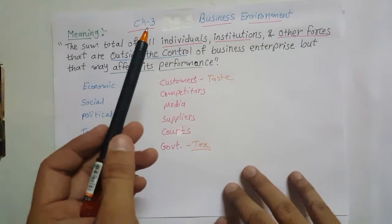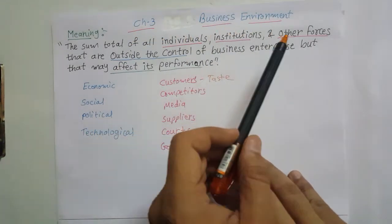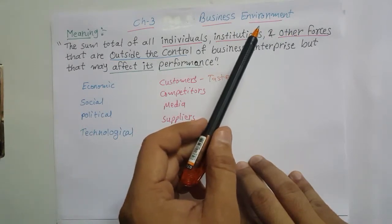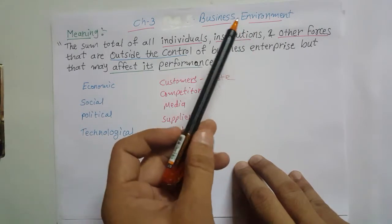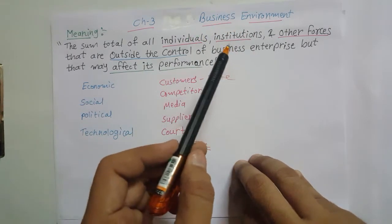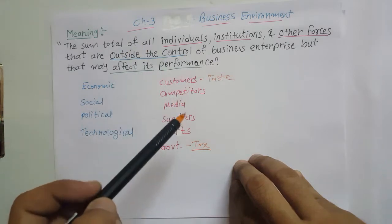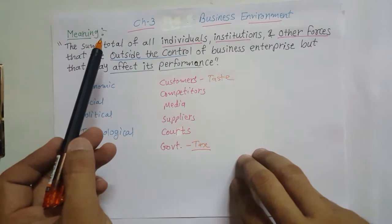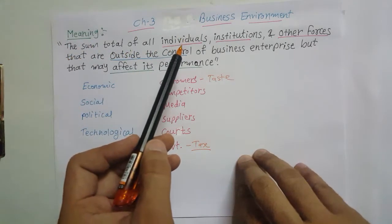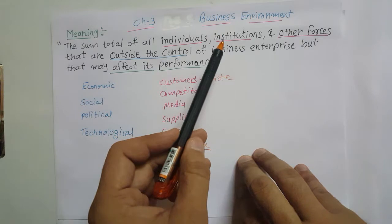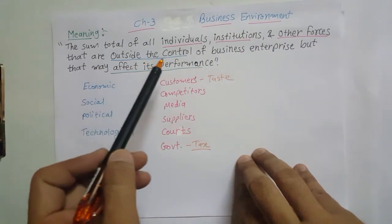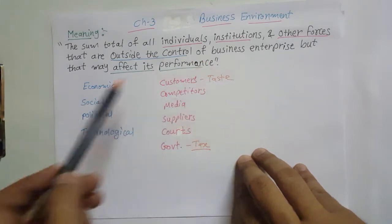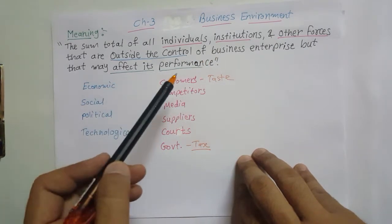Today we are going to start a new chapter: Business Environment. Environment includes the things around us, but when we talk about business environment, which things are included? The sum total of all individuals, all institutions, and other forces that are outside the control of our business or enterprise, but that may affect its performance.